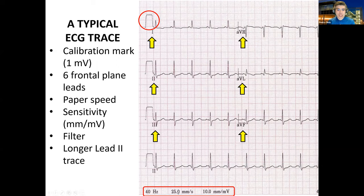Next, you want to check the paper speed, which is very important for calculating the heart rate. In this specific ECG, we see a 25 millimeters per second paper speed. We can also see the filters used — in this case a 40 millihertz filter — and again, the sensitivity is 10 millimeters per millivolt.